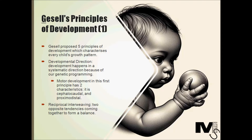This principle states that development happens in a systematic direction because of our genetic programming. Motor development in this first principle has two characteristics or directions: cephalocaudal and proximodistal. Cephalocaudal implies growth directed from head to toe, implying that an embryo's arms start appearing before its legs — so growth in a human being happens from head to toe. Proximodistal means bodily growth from the center of the body to its ends. So bodily growth happens from head to toe and also in an outward direction according to Gesell.